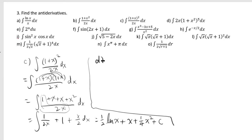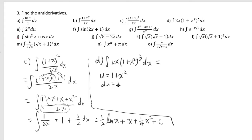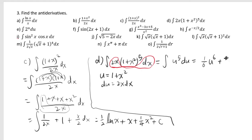On the other hand, part d has the derivative of the inside function present. The derivative of 1 plus x squared is 2x, so the derivative of the inside function is multiplied rather than divided. In this case, you really want to use u-substitution. Set u equal to 1 plus x squared, so du equals 2x dx. Then 2x dx becomes du, and you end up with u to the fifth power times du. Using the power rule, add 1 to the exponent and put the reciprocal in front. Since u is 1 plus x squared, the final answer is 1 sixth times 1 plus x squared to the sixth power plus c.